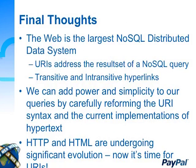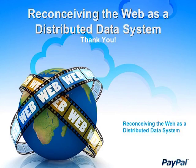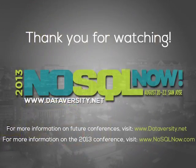Final thoughts: is anybody not convinced that the web is a big distributed data system? The URI addresses a result set of a NoSQL query. We have two kinds of hyperlinks. We can add power and simplicity to our queries by reforming the URI syntax. There's a lot of evolution around HTTP and HTML — why is there no evolution in the URI space? That's where we really need to go. Thanks everybody.